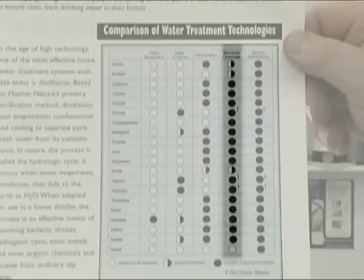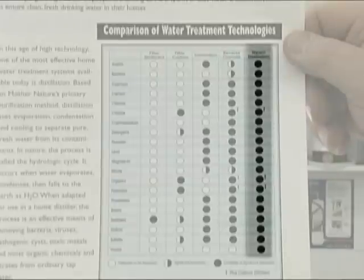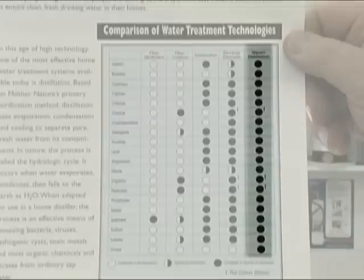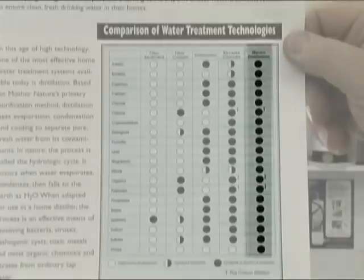Reverse osmosis still leaves arsenic and bacterium, doesn't take out all fluorides, takes out some nitrates, but fails to remove any viruses. Steam distillation along with a carbon post filter takes out everything that's in the water. It significantly reduces every element in the water, so we come out with nothing but pure H2O.